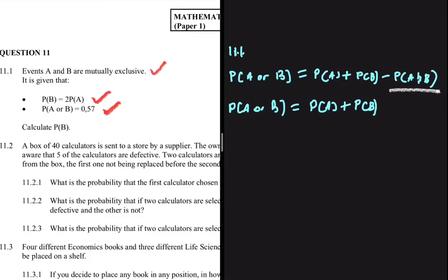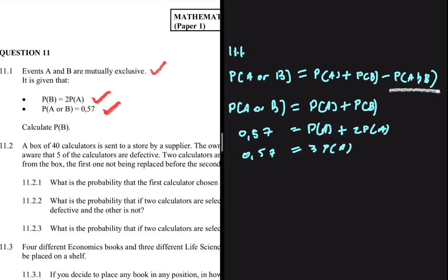So the probability of A or B is 0.57, which equals the probability of A plus the probability of B. The probability of B is 2 times the probability of A, so we have 0.57 equals 3 times the probability of A. Dividing both sides by 3, the probability of A equals 0.57 divided by 3, which equals 0.19.